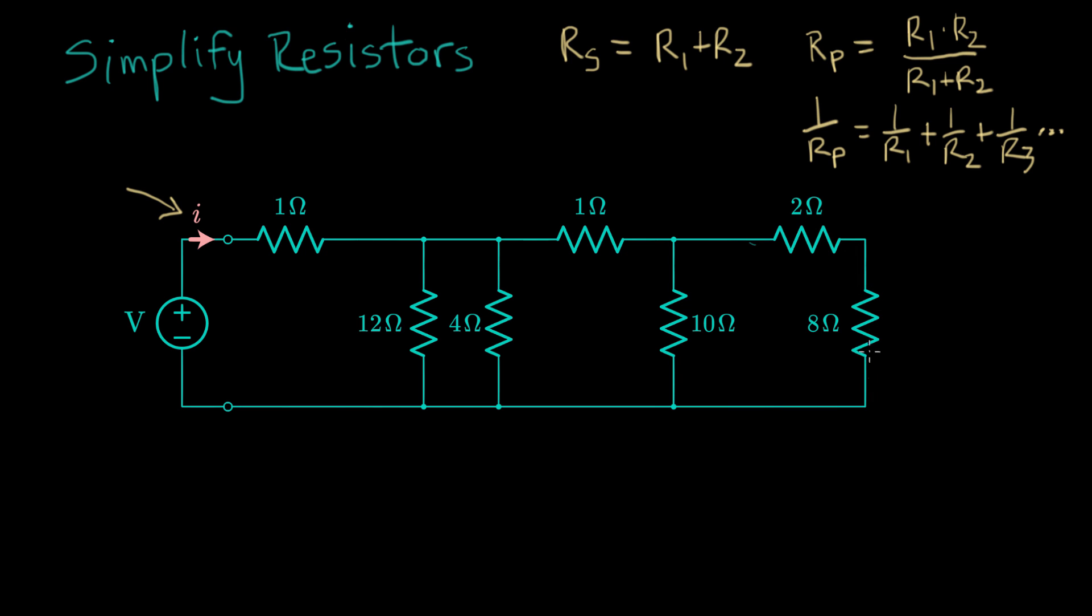We're basically now going to do the work of simplifying this network. So what I see here is two resistors in series. Two ohms plus eight ohms equals 10 ohms. So I can remove these resistors here and replace them with a 10 ohm resistor. That's step one.